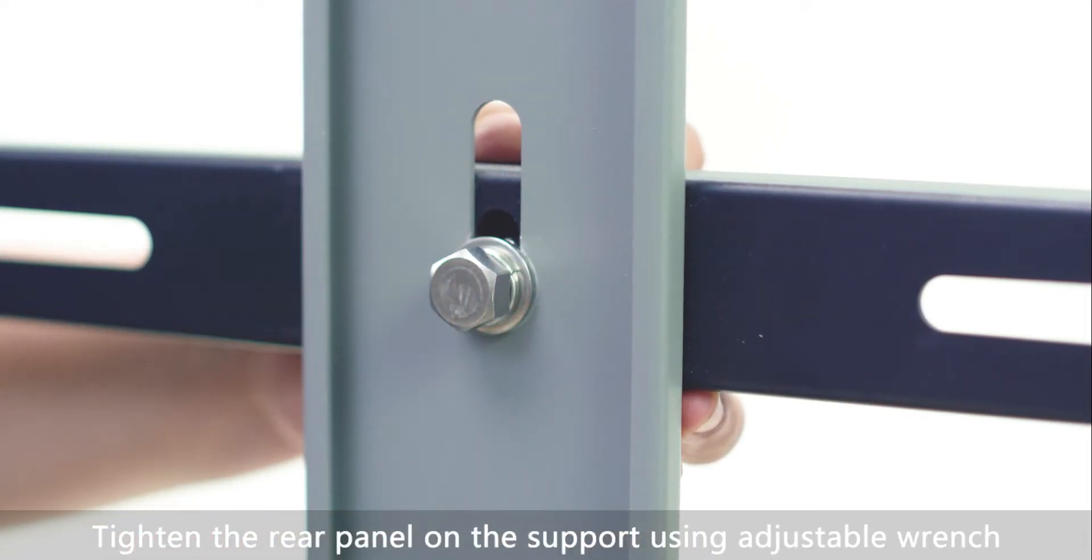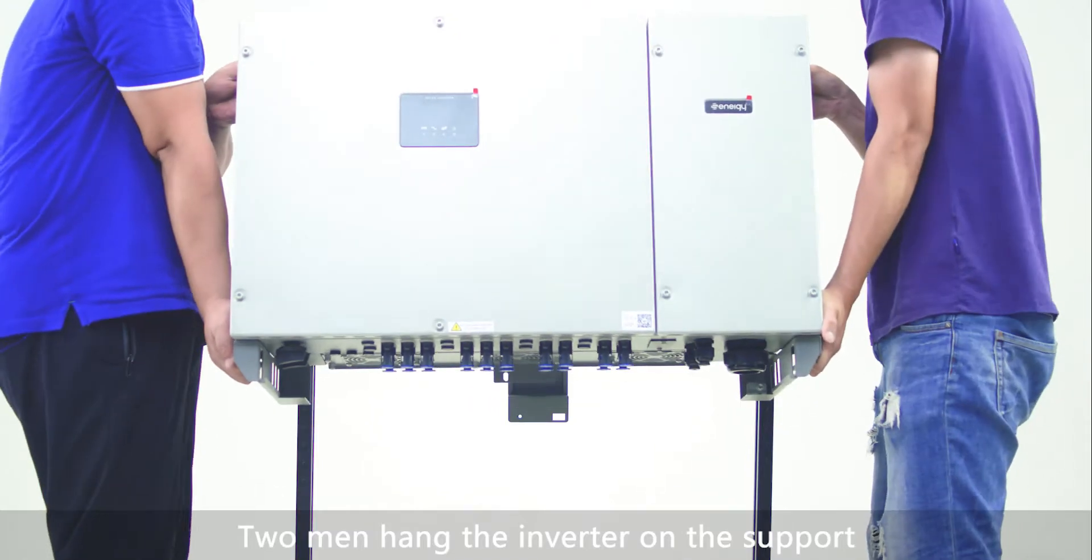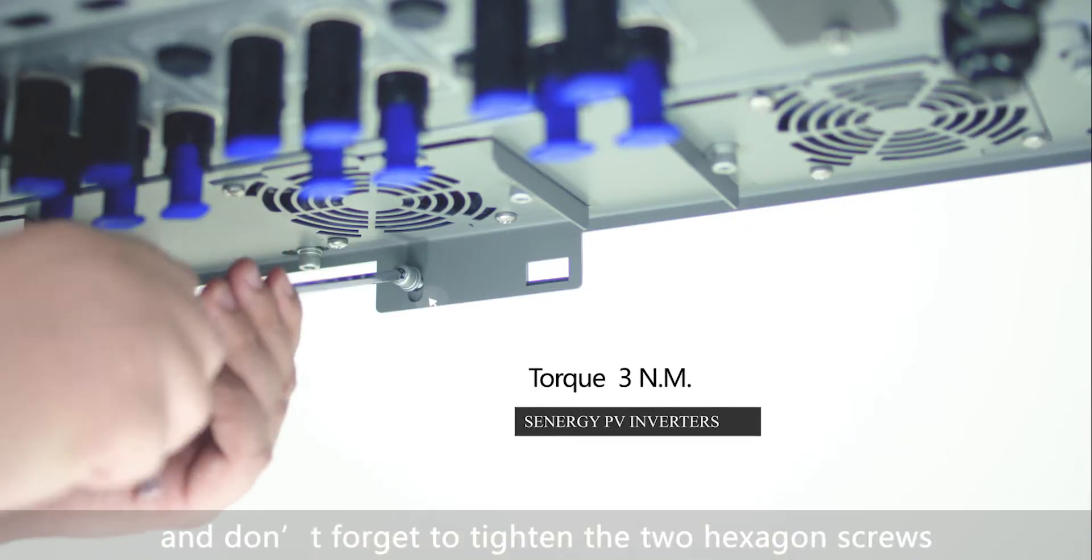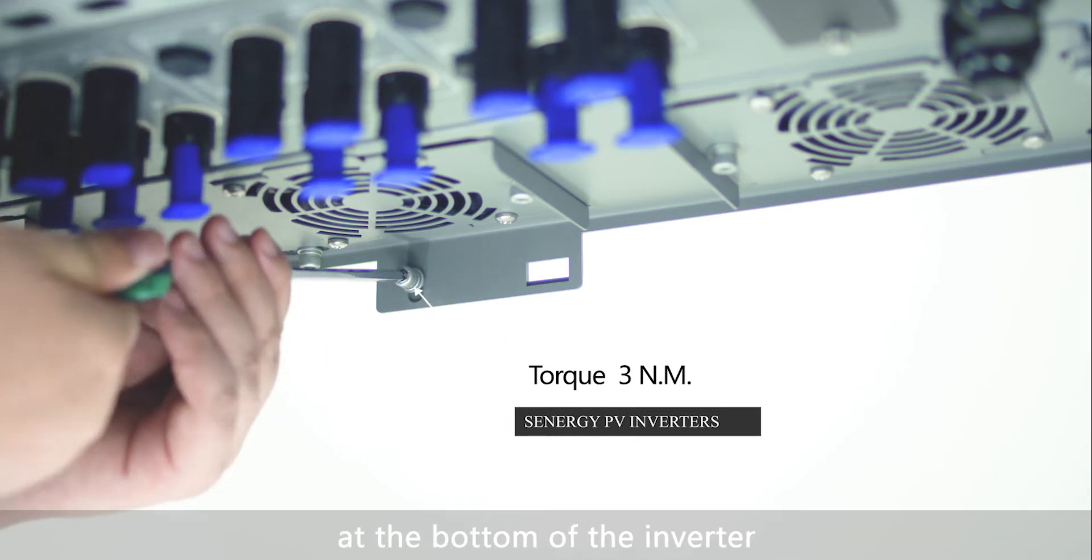Tighten the rear panel on the support using adjustable wrench. Two men hang the inverter on the support, and don't forget to tighten the two hexagon screws at the bottom of the inverter.